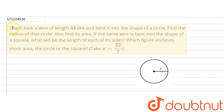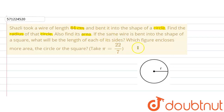The given question says that Shazlee took a wire of length 44 cm and bent it into the shape of a circle. Find the radius of that circle. We are supposed to find out the radius, and also find its area. This is the first part of the question, where we find the area and radius of the circle formed by bending a wire of length 44 cm.